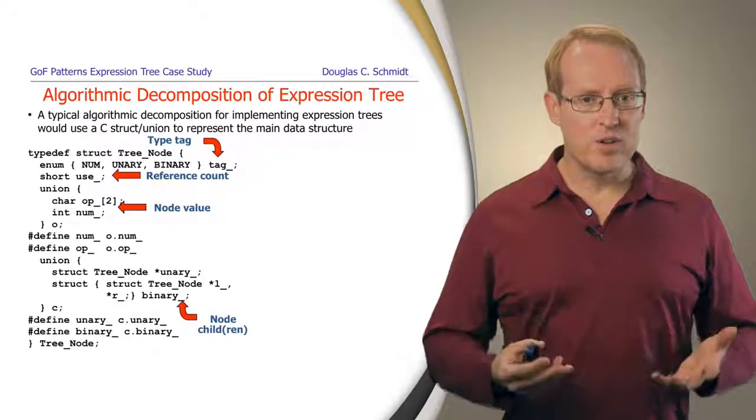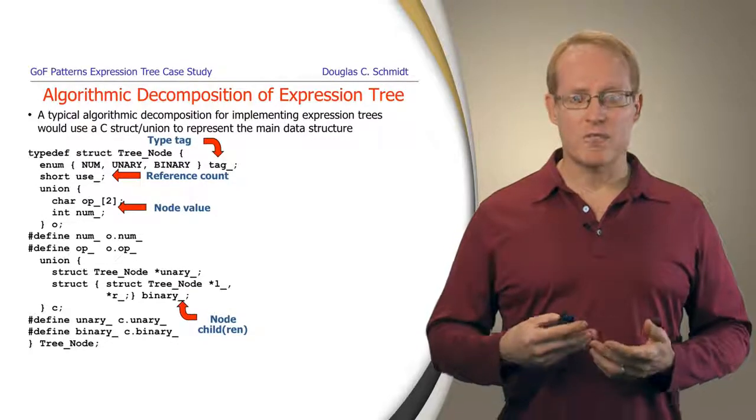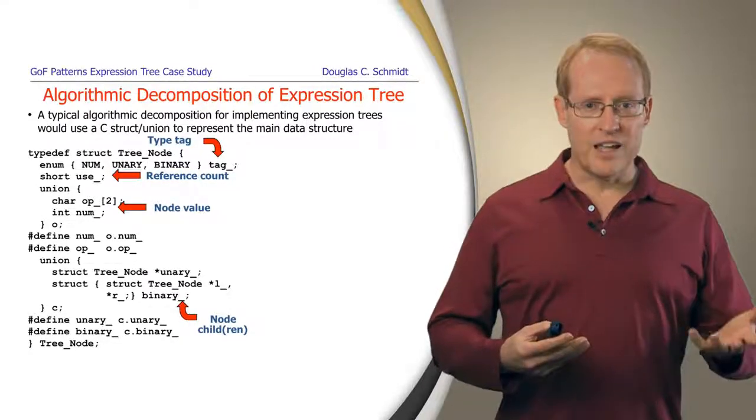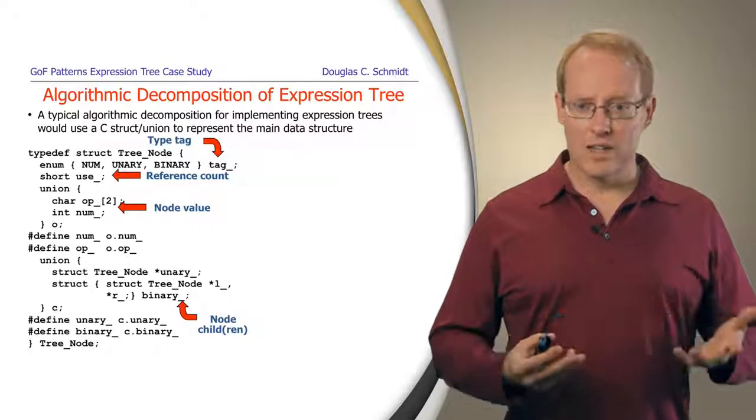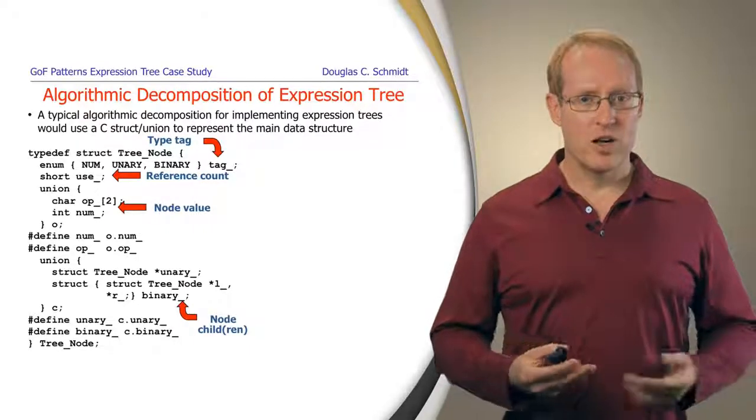Likewise, you can also see how we have another union that we use to keep track of pointers to a left child if we're a unary node, or a left and right child if we're a binary node.